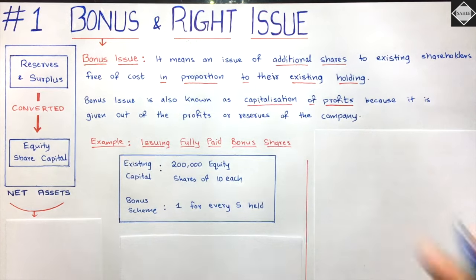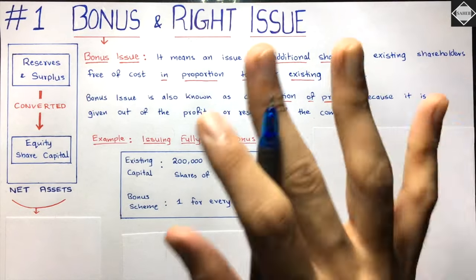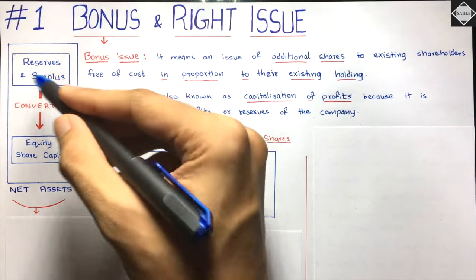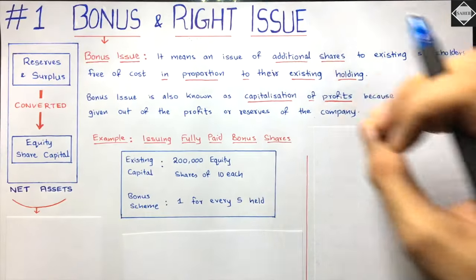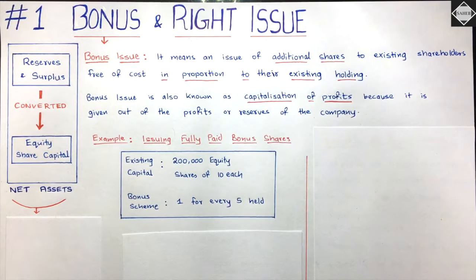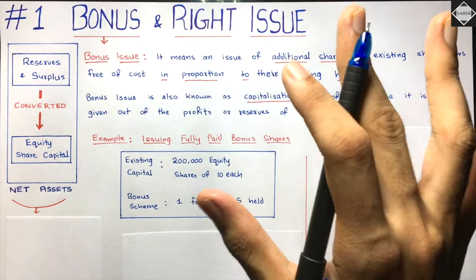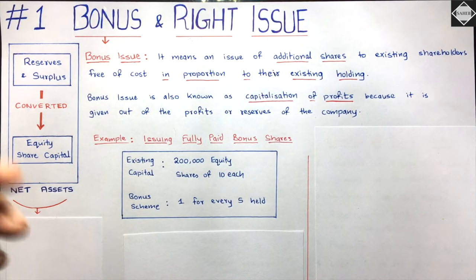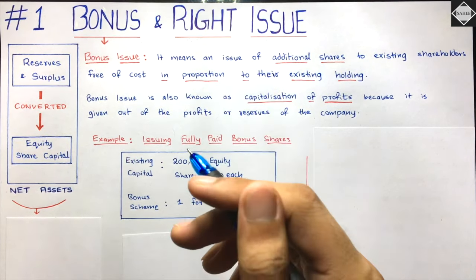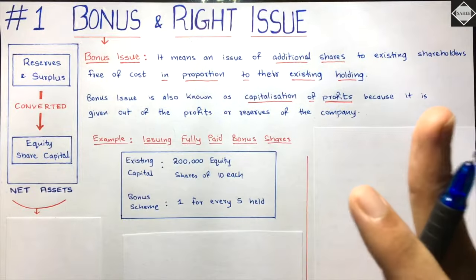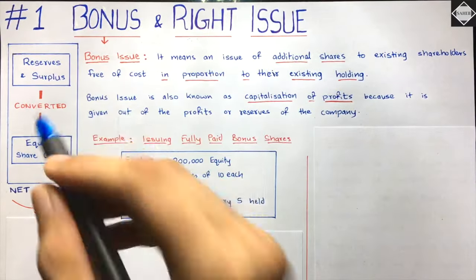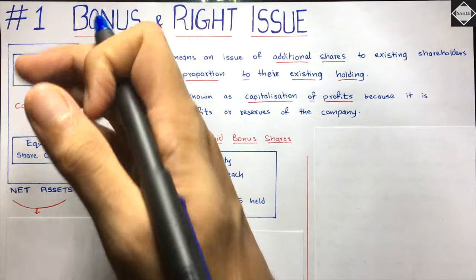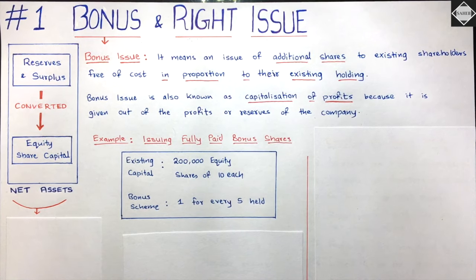Bonus issue is really simple. All that happens is reserves and surplus of the company are converted into equity share capital. Money from reserves and surplus is pulled out and put into equity share capital. No cash inflow or outflow - it's just whatever exists in the company being shuffled.